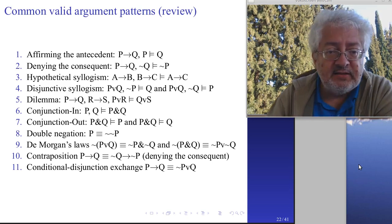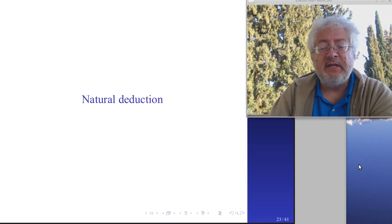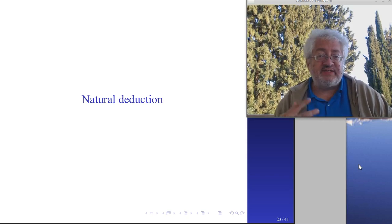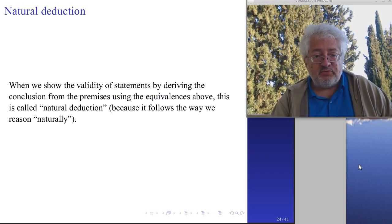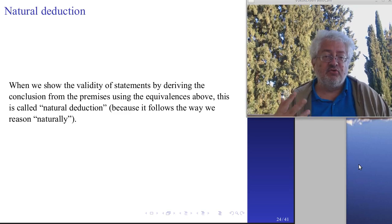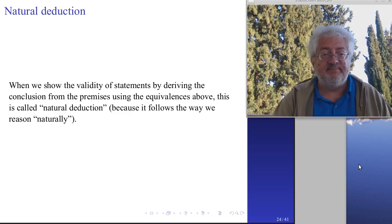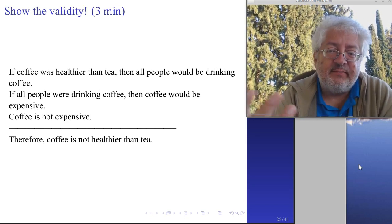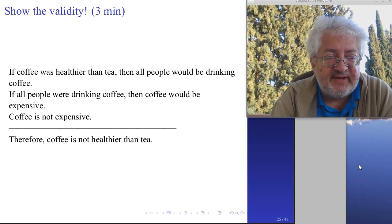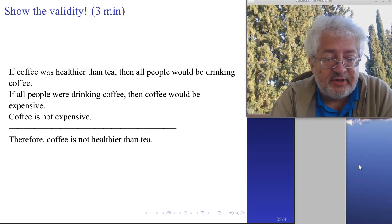Now we come to natural deduction - how does this work? When we want to show the validity of statements by deriving the conclusion from the premises, this is called natural deduction because it follows the way we reason naturally - or so philosophers say. You will get used to it.